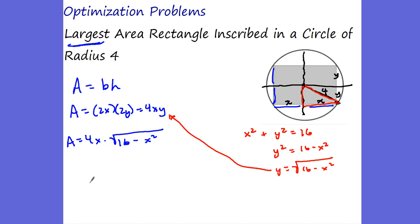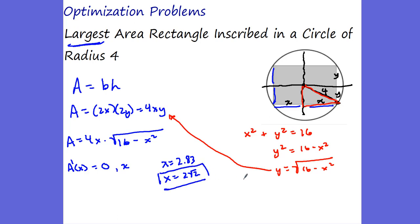So area A equals 4X times the square root of 16 minus X squared. We optimize this equation by taking the first derivative, setting it equal to zero, and solving for X. In your calculator, you get X equals 2.83, which is 2 root 2. So the largest area has an X value of 2 root 2, making the base 4 root 2. To find Y, plug X back into the constraint. Once you know X and Y, plug into A equals 4XY to get your area.